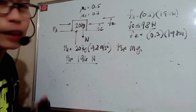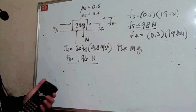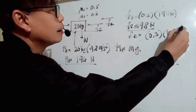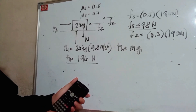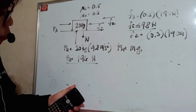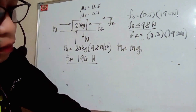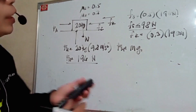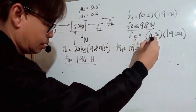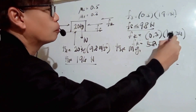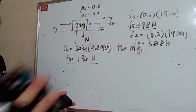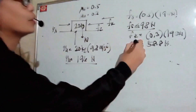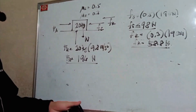Your static friction may vary — I'll explain why. Solving for Fk, we have 0.3 multiplied by 196, which equals 58.8 newtons. So your Fk is 58.8 newtons. That's the value for your static friction and for your kinetic friction.